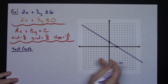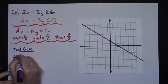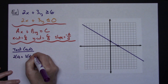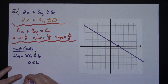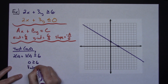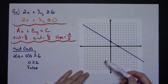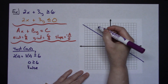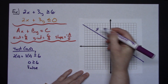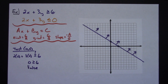I need to decide which way to shade, so I'll test (0, 0). Looking at the equation: 2 times 0 plus 3 times 0 — is that greater than or equal to 6? On the left side we get 0, so zero greater than or equal to 6 is a false statement. That means (0, 0) is not a solution, so none of the points on this side are solutions. The other side is where I shade.